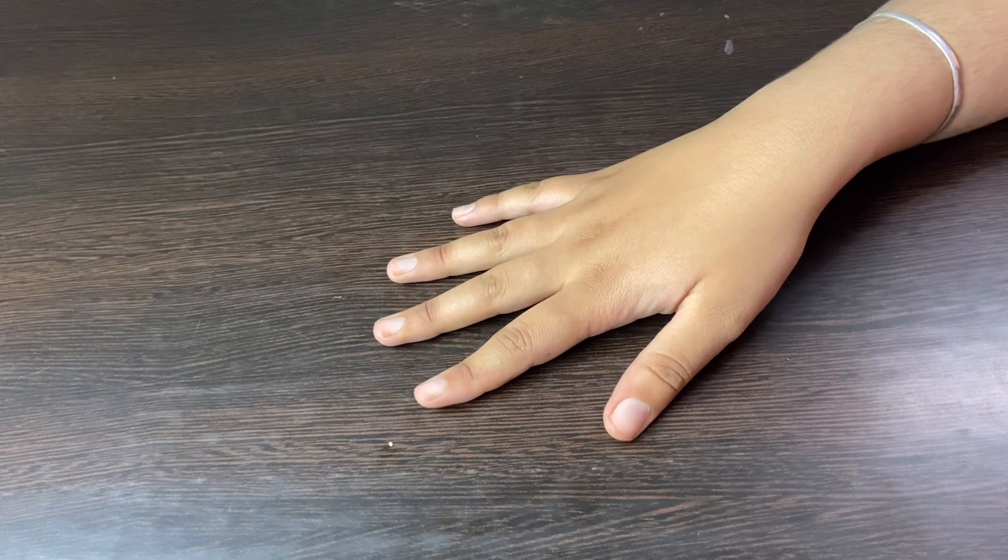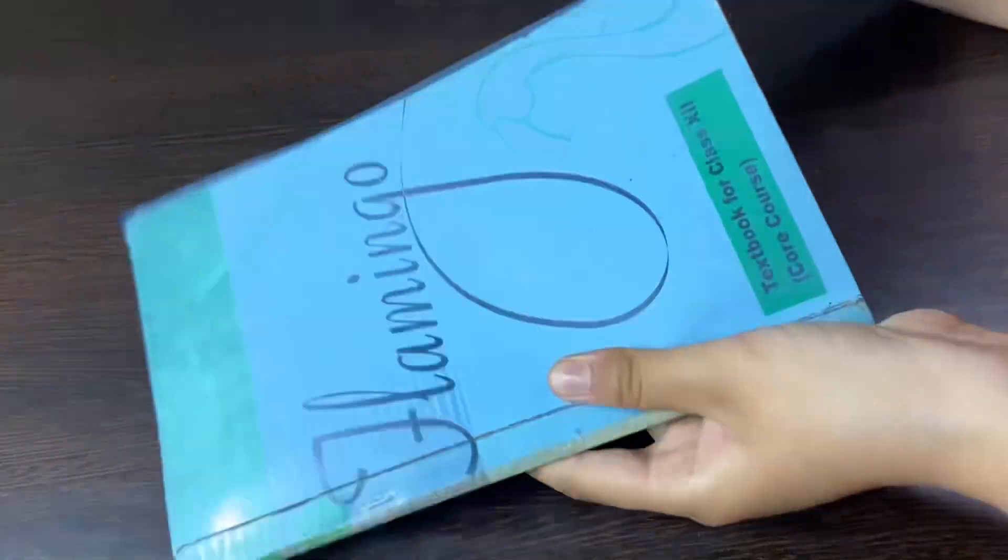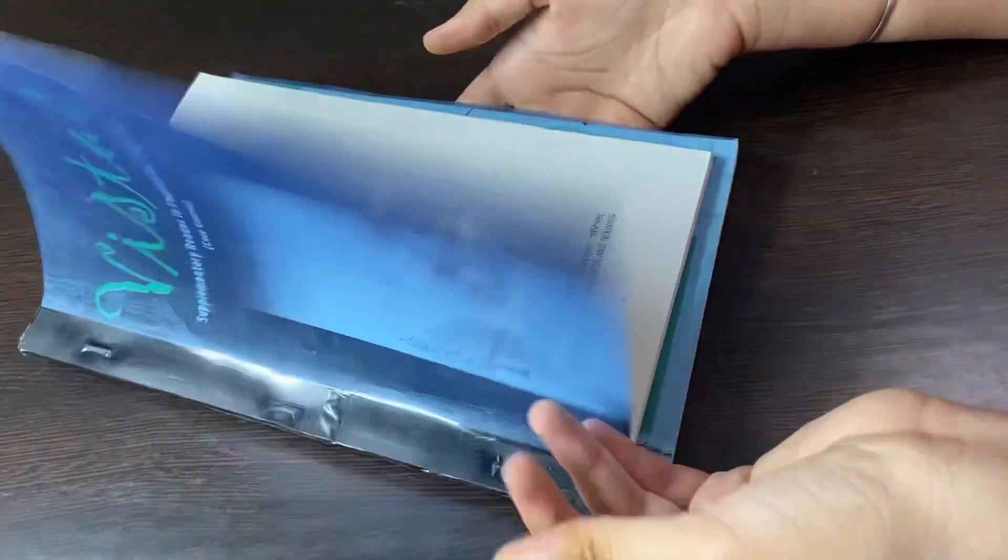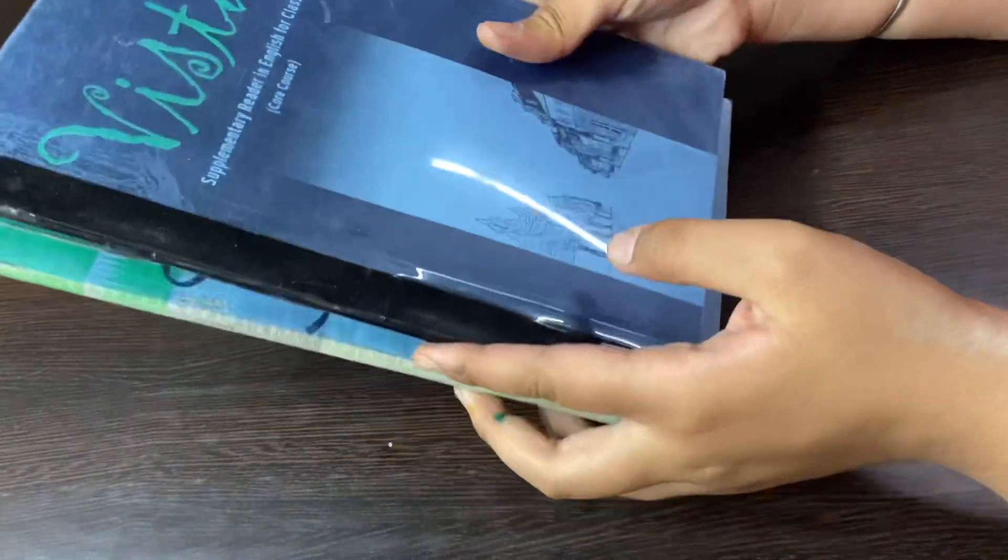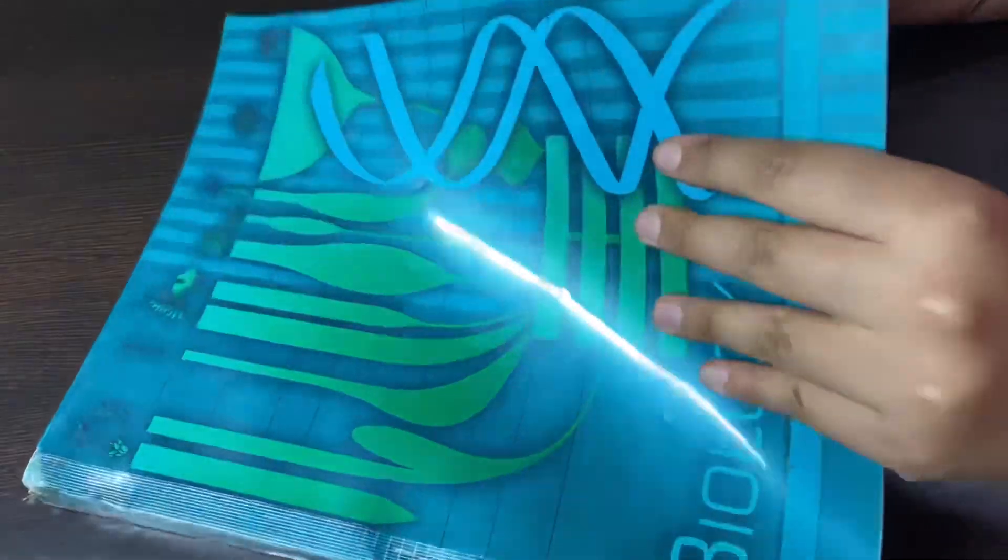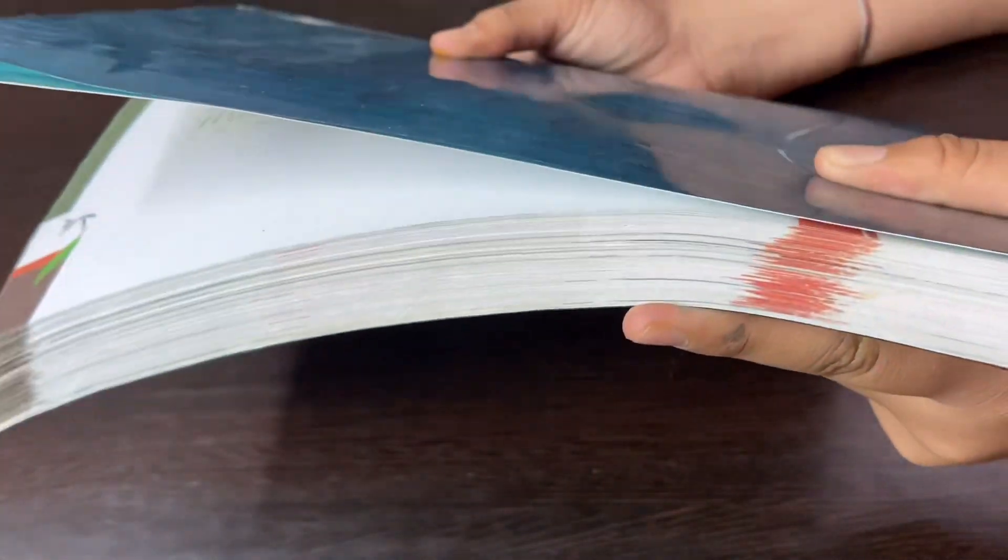Now let's move on to the textbooks. This year I also got the English textbooks which I did not get in my 11th grade. I got the older ones because I know I'm not going to use them much. Firstly, these are the NCERT textbooks. I don't know why, but I feel like plus two NCERT is a little bit thinner than plus one NCERT.